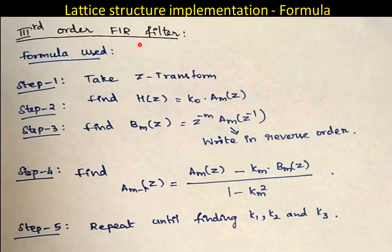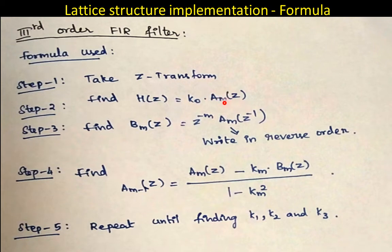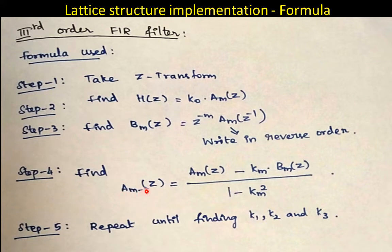For higher order filters, the first step is to take the Z-transform of the difference equation to convert it to the Z-domain. This makes it easy to calculate H(z). The H(z) equation is in the form k0 · Am(z). The polynomial Am(z) can be written in reversed order to find Bm(z), and from Am(z) you can easily calculate the value of km. Steps 2, 3, and 4 are repeated until you reach A1(z).